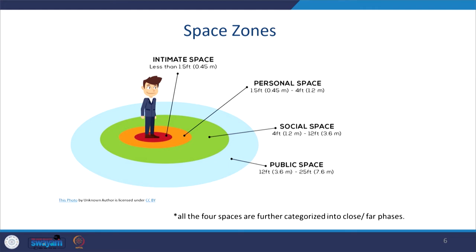Social space is where the distance widens further, ranging from 4 to 12 feet. Depending on our relationship, the distance widens to give more meaning. Then there is public space, where most talks actually take place and the distance is even greater.